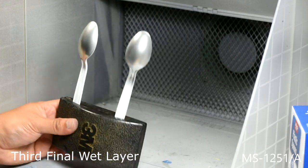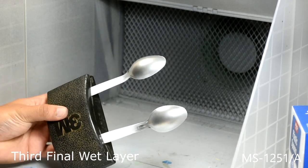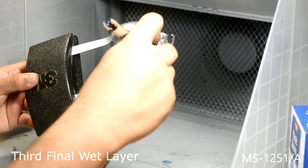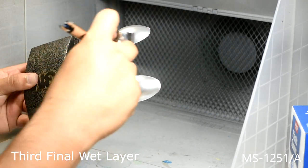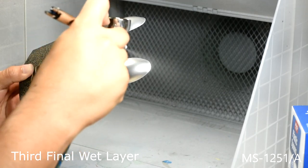For my final layer my goal again is for even coverage across the surface. I want to evenly cover the surface of the spoon the best I can with only a couple of coats of the silver base.